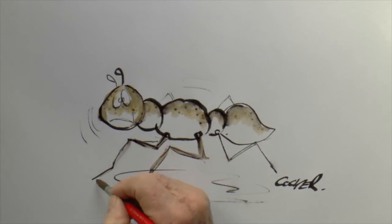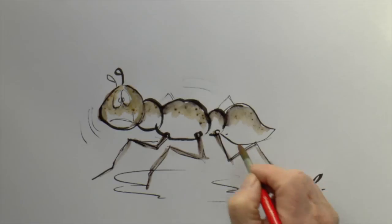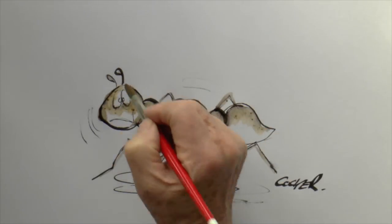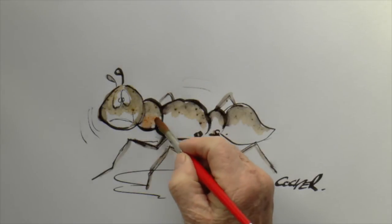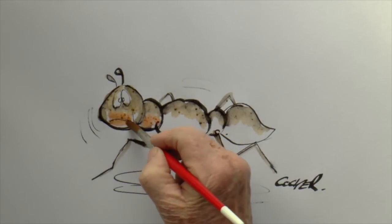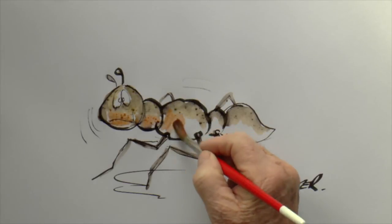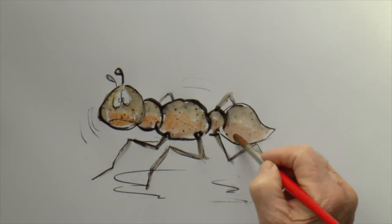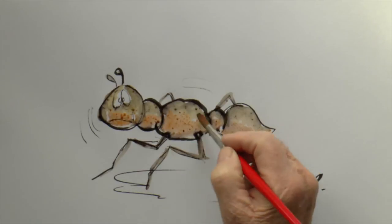There we go. There's his little legs. And we'll colour the bottom of him. There we go. This happens to be a little boy ant.